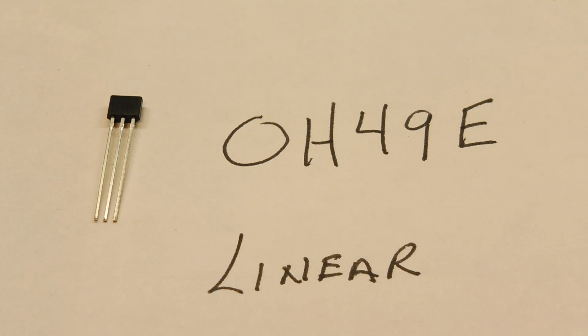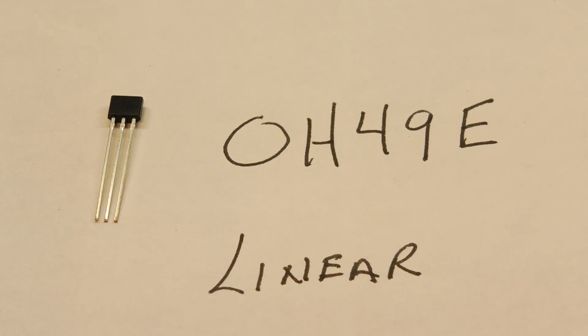So as the magnetic field density strength rises, we'll get a higher voltage, and as it decreases, we'll get a lower voltage. So this will give us a linear output that we can feed into an A to D converter on our Arduino Nano.